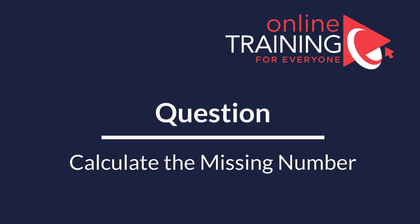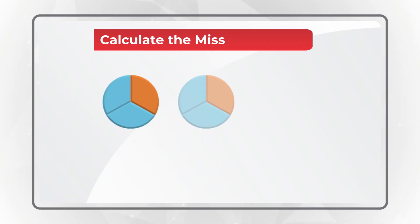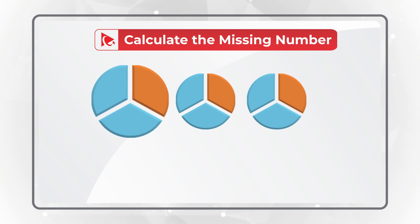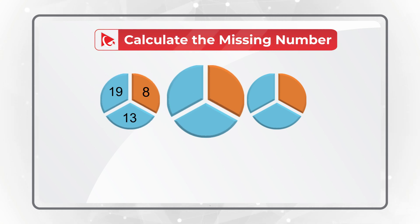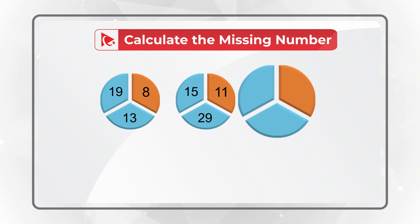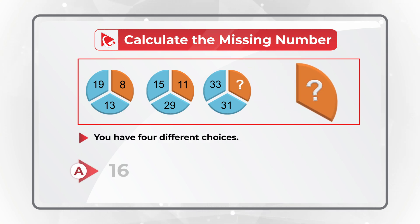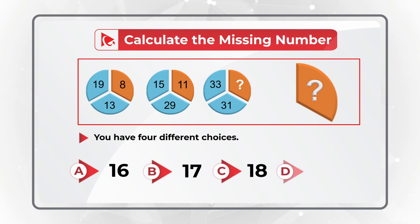Here is a puzzling question with a very surprising solution. You're presented with three circles, each broken into three equal parts. The first circle has numbers 8, 19, and 13. The second circle has numbers 11, 15, and 29. The third circle has numbers 33, 31, and a missing number. You need to calculate the missing number from four choices: A, 16; B, 17; C, 18; D, 20.